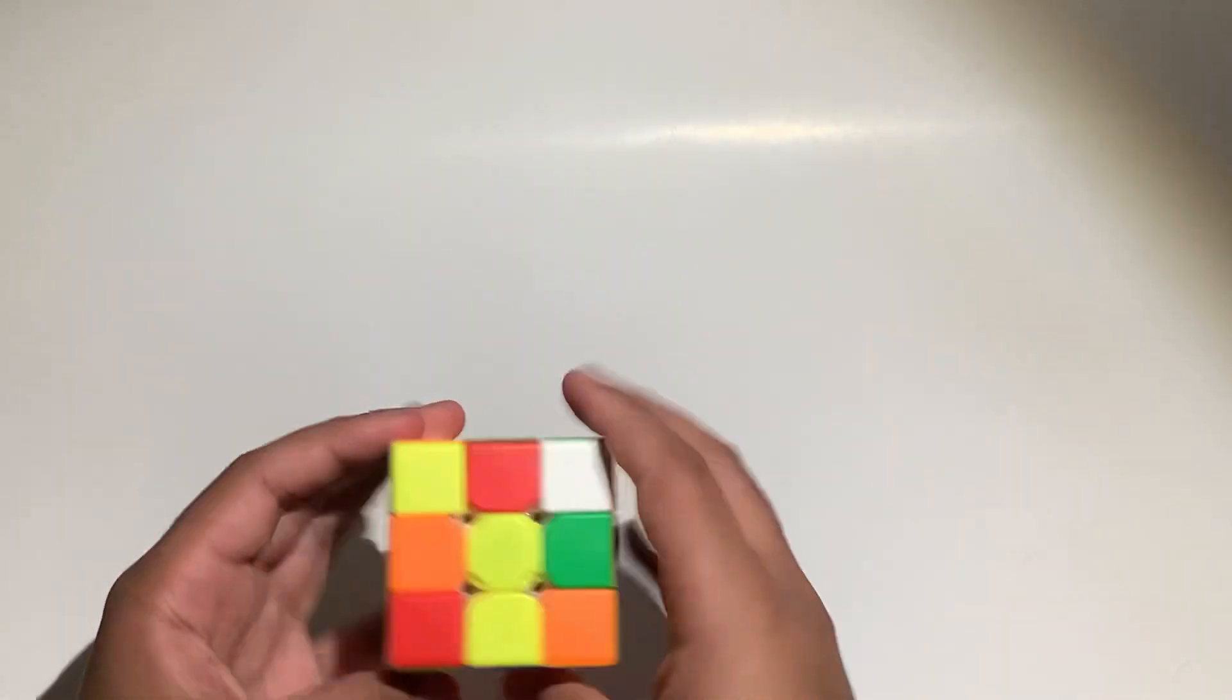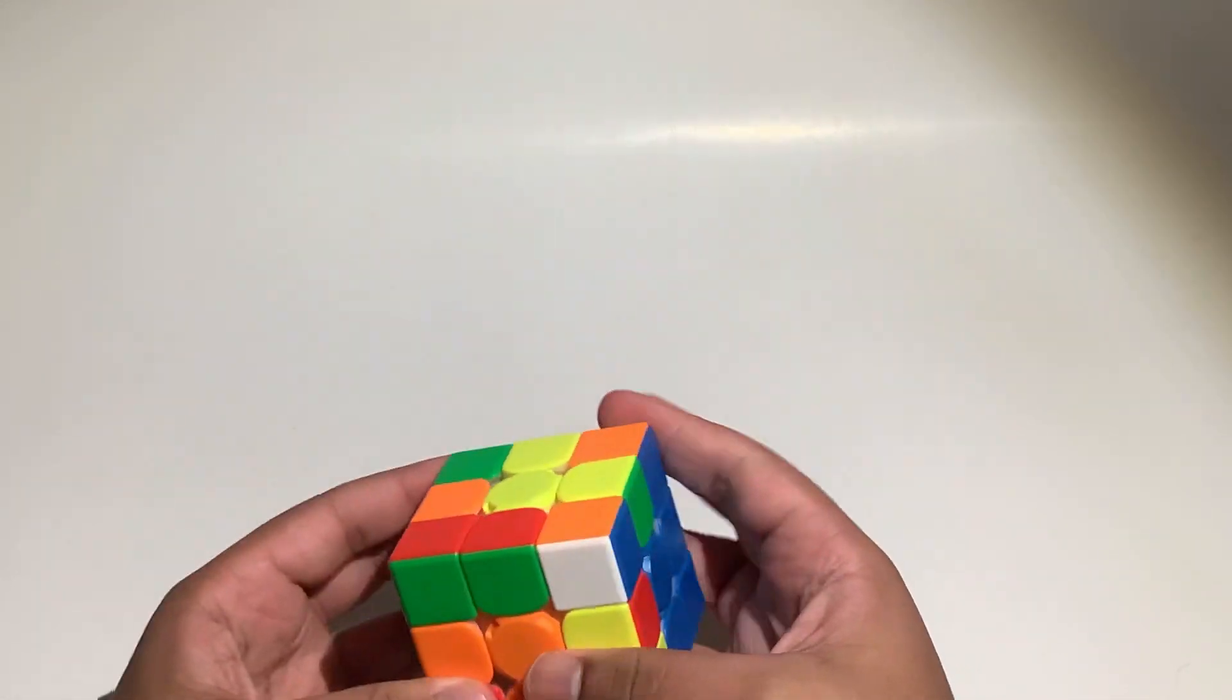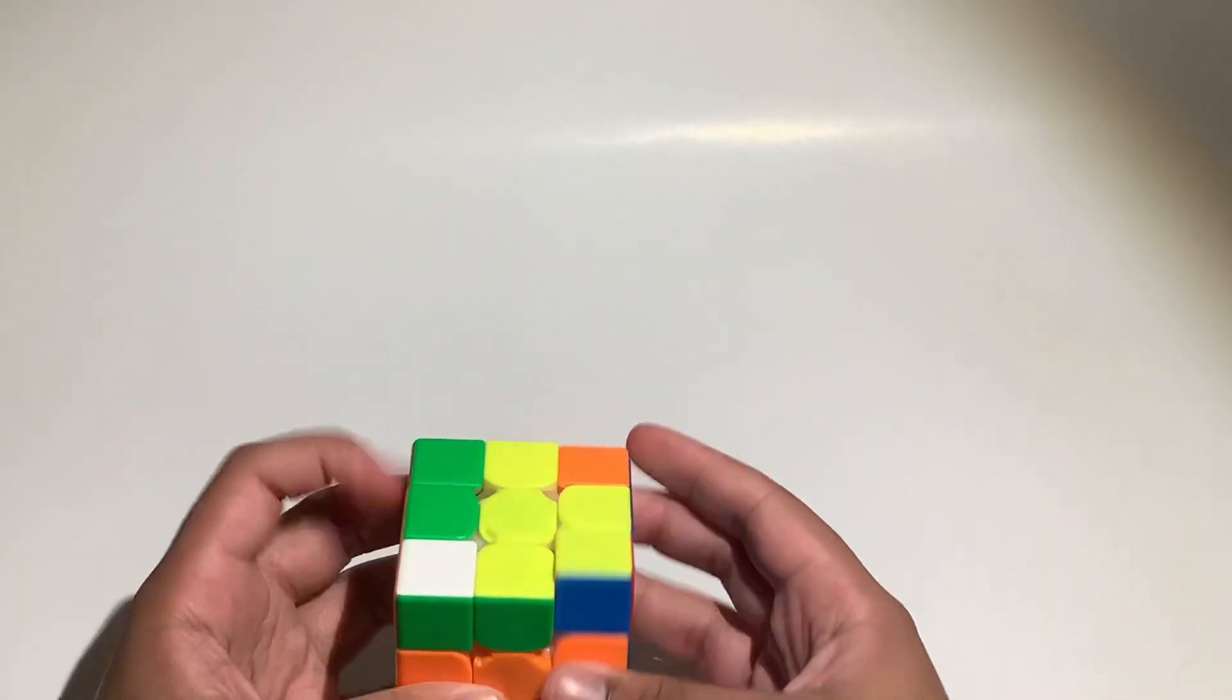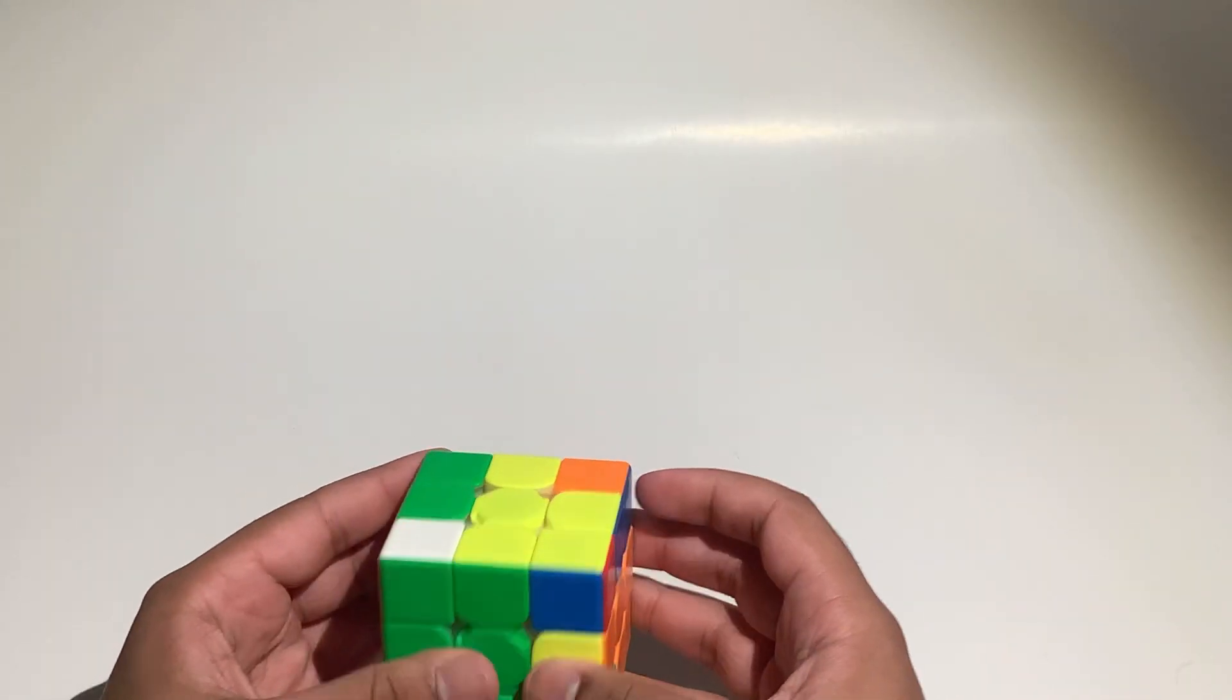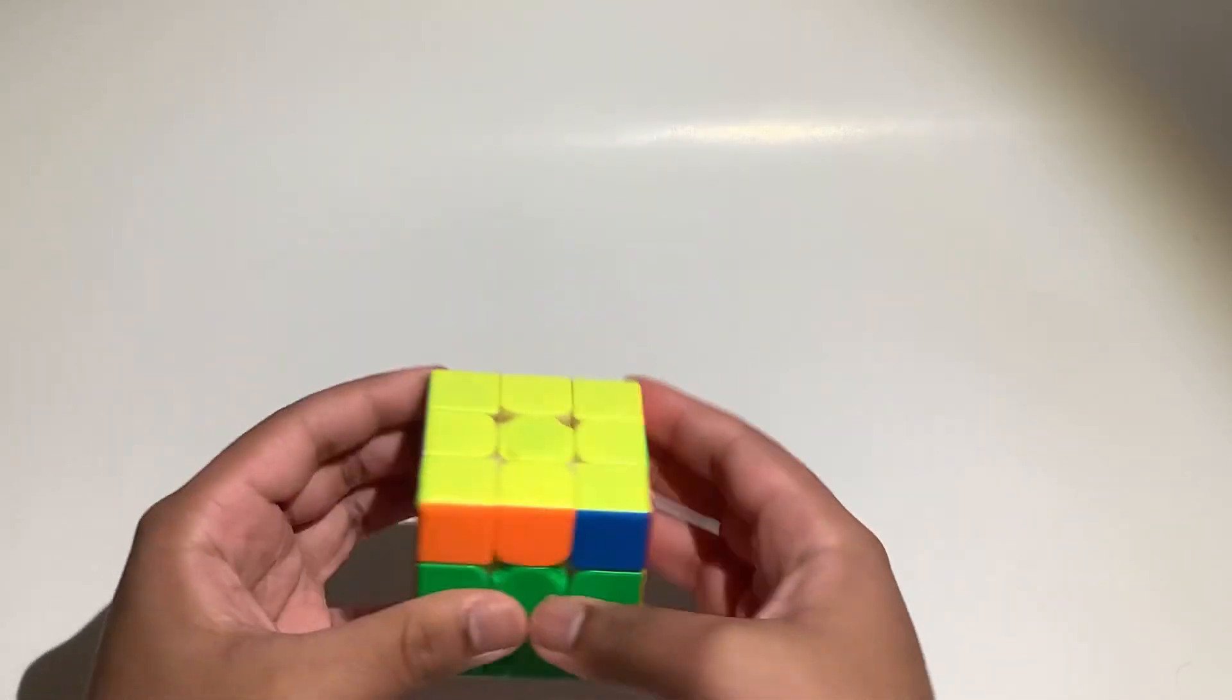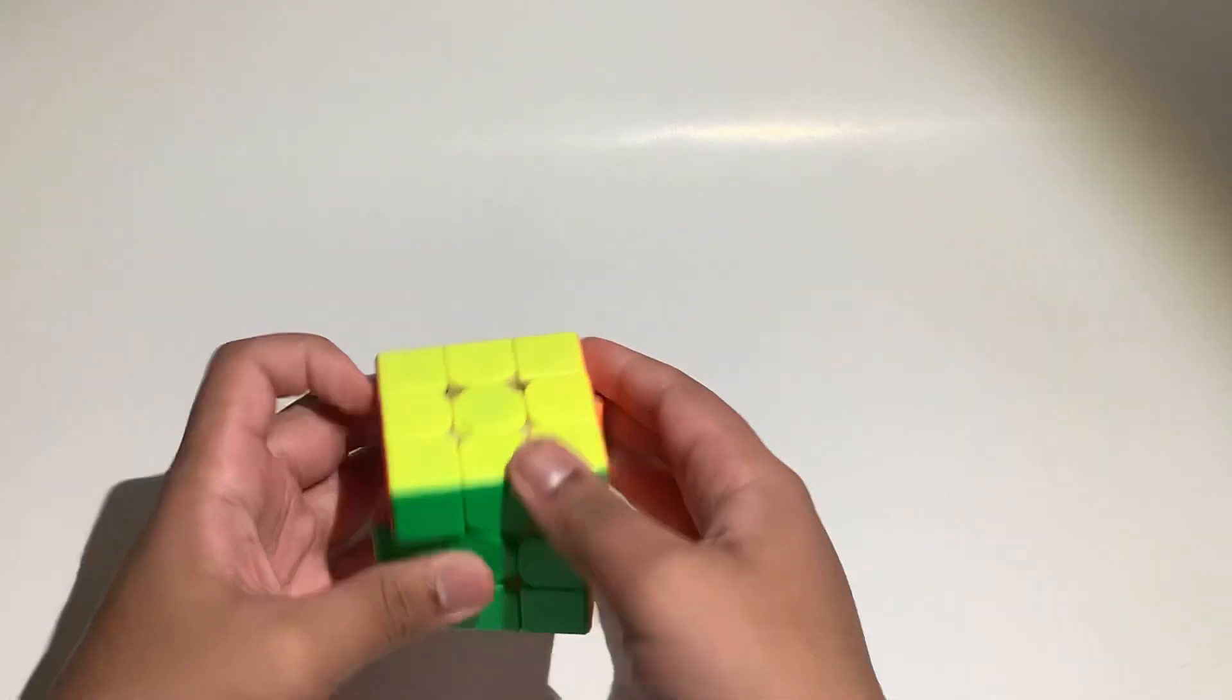And now I just finish off the cross. Now I have these two like that, pair it. And now I have these two, pair it and insert. And now I am going to rotate because I know that I can preserve cross on the top and then OLL and PLL.